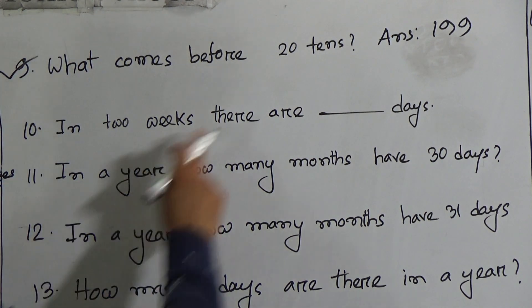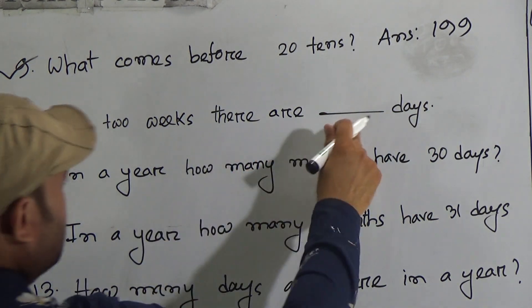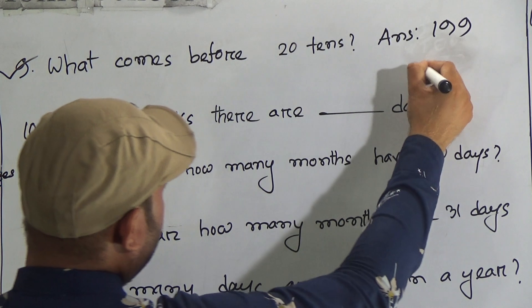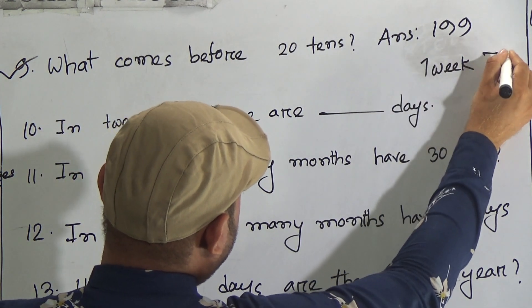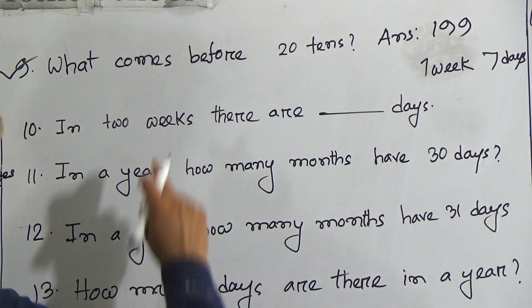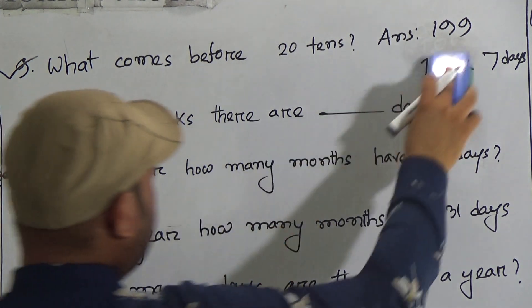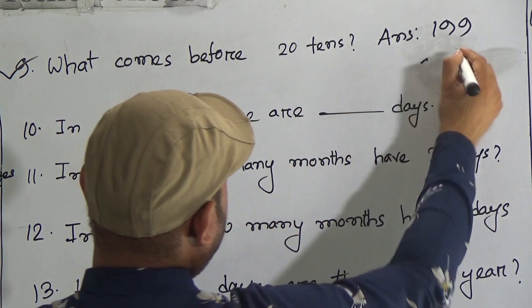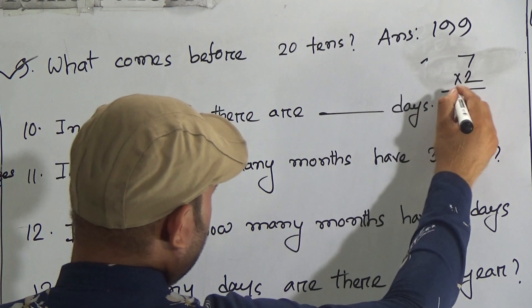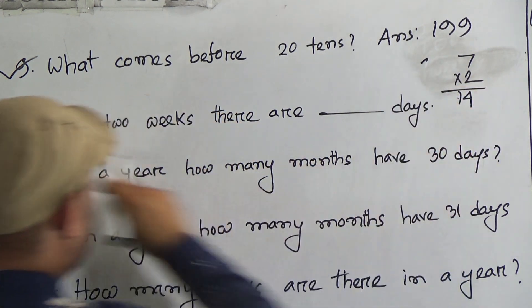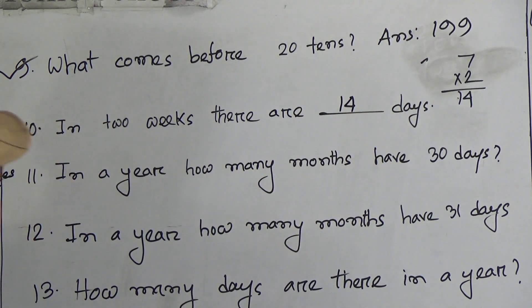Question number 10: in two weeks, there are how many days? Do you know how many days are in a week? In a week there are seven days. So in two weeks there will be 7 multiply by 2. We know that 7 twos are 14. So in two weeks there are 14 days.